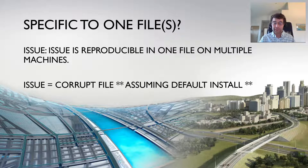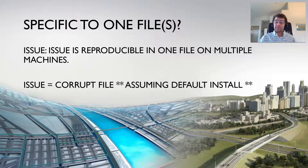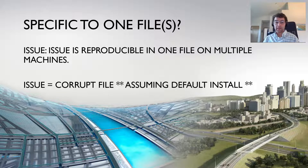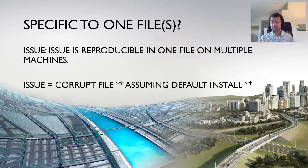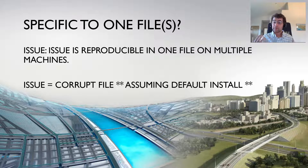Question one: specific to one file. I define this issue as the issue being reproducible in one file on multiple machines. If you're seeing an issue in a file and something's not working, can your coworker open it up and see the same issue? They should be in the same environment — sitting next to each other in the office. If they see the issue as well, that indicates it's a corrupt file, a file-specific issue. It's highly unlikely that there are issues with multiple files across multiple installs — that defaults to a corrupt file.